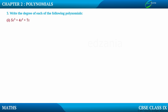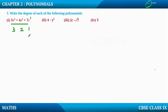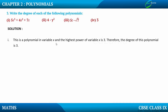The next exercise asks us to write the degree of each of the following polynomials. In the first example, the powers of x are 3, 2, and 1. The highest power is 3. Therefore, the degree of this polynomial is 3.